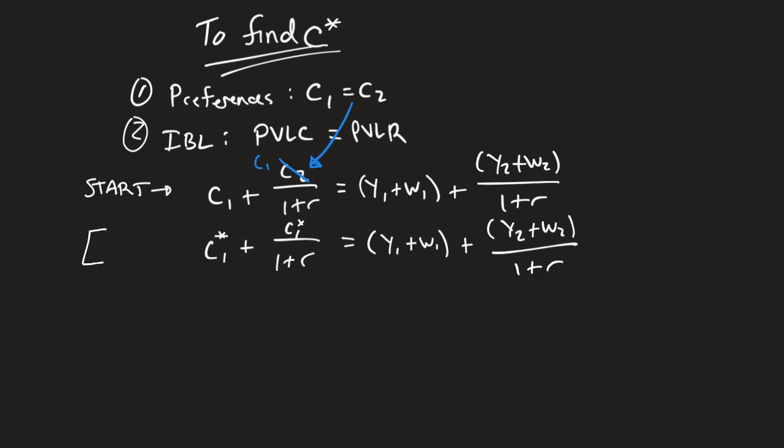So we're going to multiply both sides of this equation by 1 plus R. So we're going to multiply everything over here by 1 plus R. We're going to multiply everything over here by 1 plus R. That's our first step. And then we're going to distribute this through. And so we're going to get C1 star times 1 plus R. And then when I distribute this through to the second term, they're actually going to cancel. So I'm left with just C1 star.